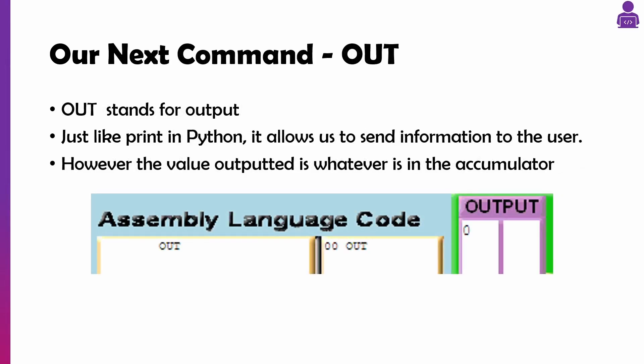Our OUT command works the same way — like print. Whatever's in the accumulator is going to get put into the output tray. If you input another number, add something to it, or load another number in, it will get rid of whatever's in the accumulator. So it's really important that if you want the data, you need to output it at an appropriate time.